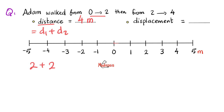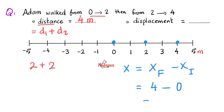Now let's try displacement. Displacement cares about the direction — it's the final point minus the initial point. The final point is 4 and the initial point is 0. 4 minus 0 is 4 meters. But I'm not done — it is 4 meters to the right, or positive 4, because positive implies walking east and not west. Positive is east; negative is west.